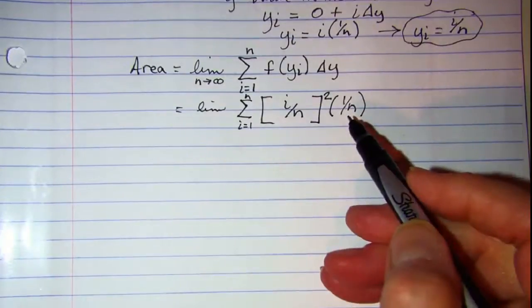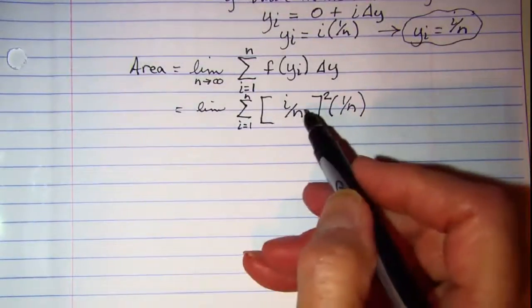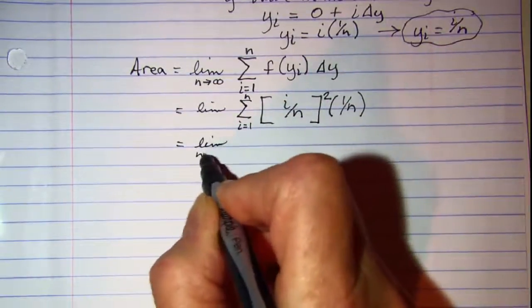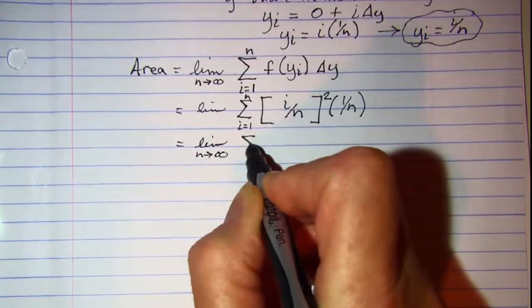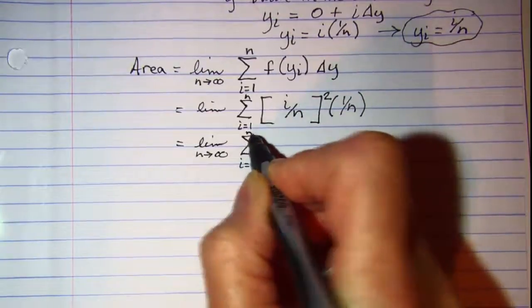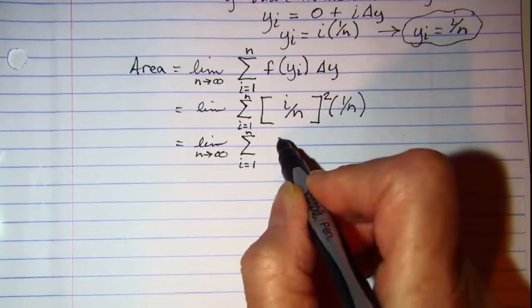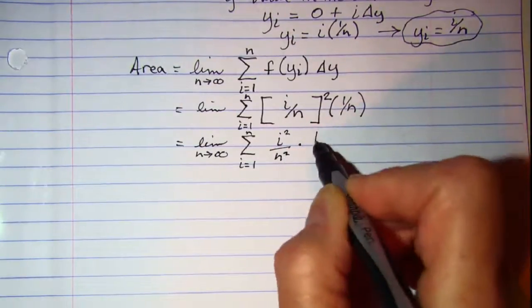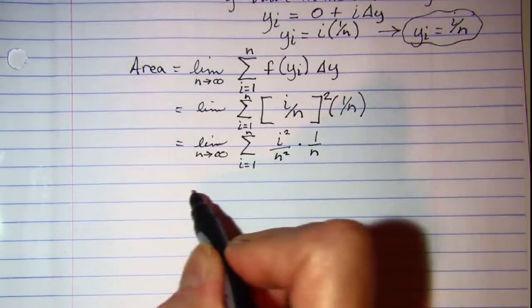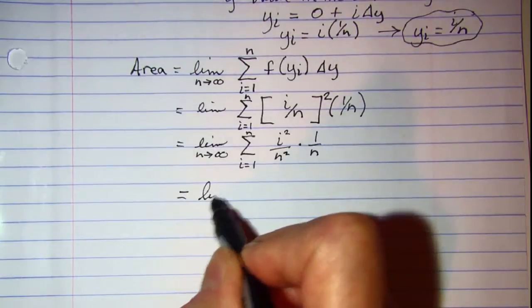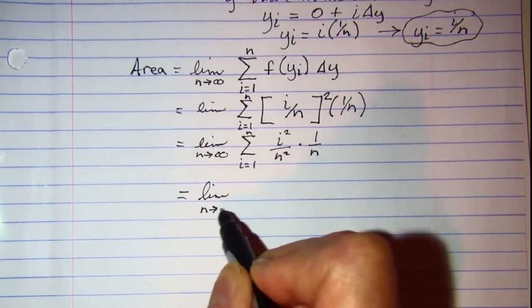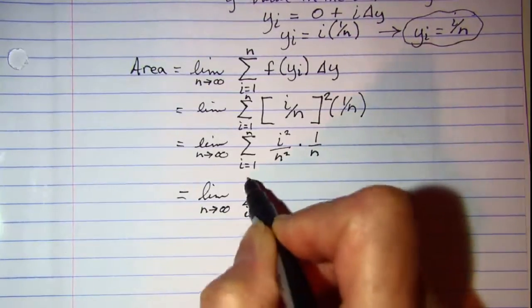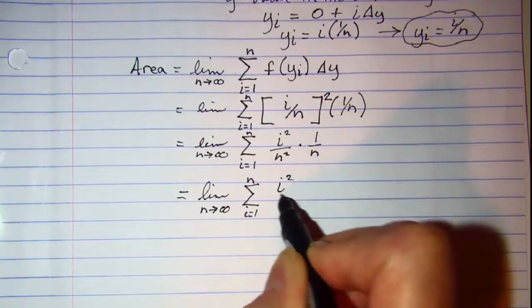Alright now we just need to do the math. Well I think I'm going to square this in here since it's very simple. Limit as n approaches infinity, summation as i goes from 1 to n. Now when I square this fraction I get i squared over n squared, and then that's multiplied by 1 over n. So I have limit as n approaches infinity of the summation as i goes from 1 to n of i squared over n cubed.